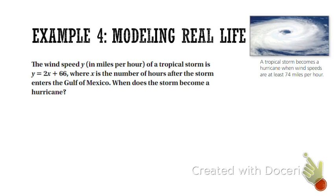All right, one more example, and we're done. Okay, so we've got this real-life application here, and obviously we're all familiar with hurricanes, so this one is talking about a hurricane. It says the wind speed y in miles per hour. One thing you need to be able to see right off the bat is what does y stand for, and what does x stand for in the equation? All right, so that's really important. If you can understand that, then you'll know where to plug in your numbers. Okay, so the wind speed of this tropical storm, they just gave us an equation, y equals 2x plus 66, where x is the number of hours after the storm enters the Gulf of Mexico.